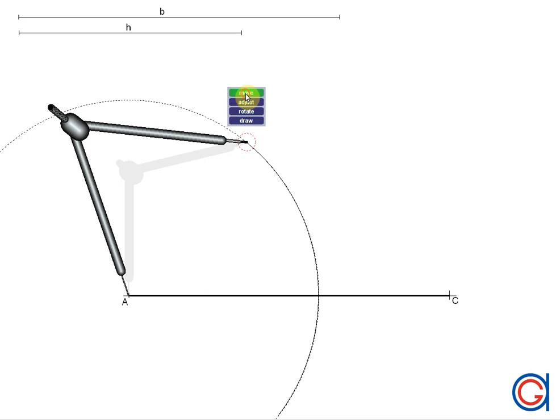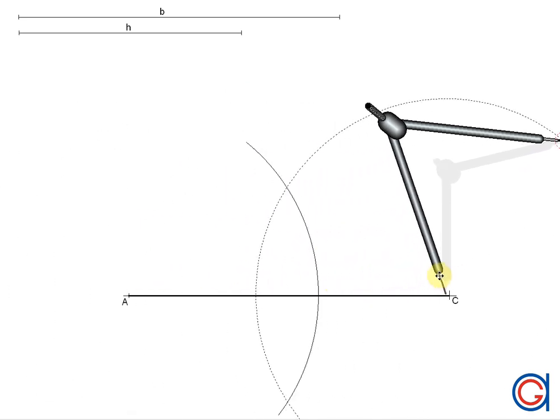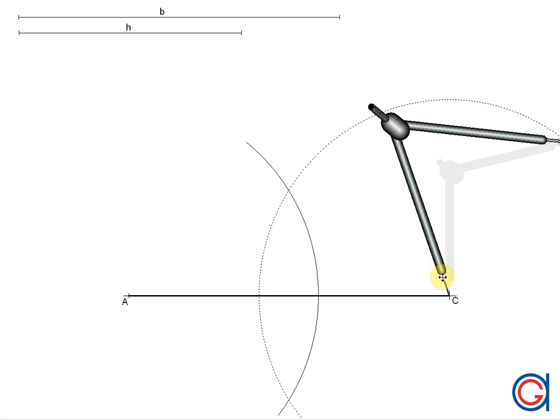And now we are going to set our compass on vertex C. We will scribe another arc above and below the line until it intersects our previously drawn arc at two points.